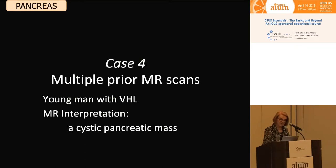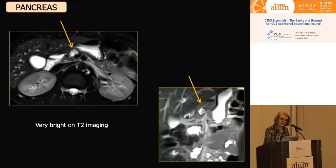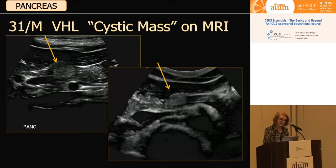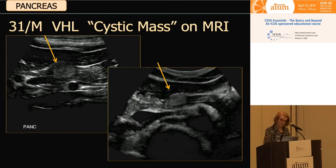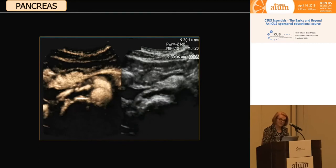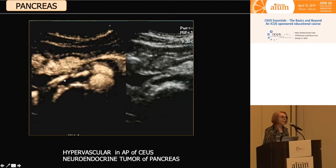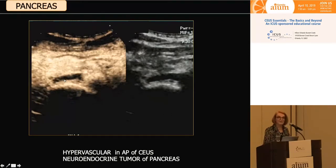Another pancreatic case: a patient with von Hippel-Lindau disease and multiple prior MR scans, which interpreted a cystic pancreatic mass. The MR T2 imaging shows a very bright mass — suggesting cystic or fluid content. Post-gadolinium, there's not a convincing enhancement. However, when the patient comes for ultrasound, we don't see a cystic mass at all. On the long axis and axial view, we see an echogenic, obviously solid-looking mass in the pancreas. On contrast injection, this mass is hyper-enhancing. Not only is the mass not cystic — the mass is not avascular either. This is a hyper-enhancing solid mass lesion.